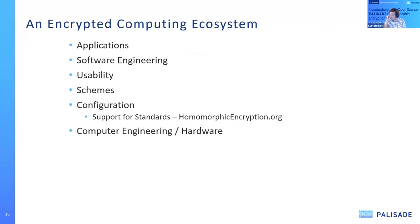We see Palisade as fitting into an encrypted computing ecosystem, supporting research, development, and production use as a platform for software engineering, research engineering, usability of lattice crypto and homomorphic crypto, and exploration of various schemes and configurations. One thing we support very seriously is emerging standards as represented in the homomorphicencryption.org draft standards, engaging with collaborators including Microsoft, Intel, Samsung, Duality, and IBM. We also engage for computer engineering and hardware acceleration of lattice crypto.